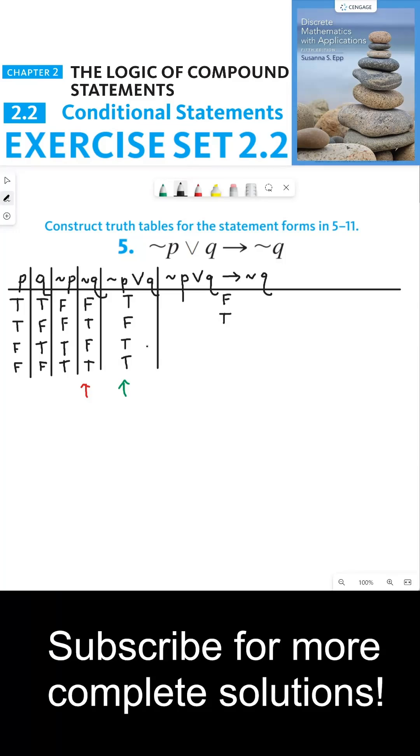It's vacuously true, but it's still true. The third row is false because the if part is true and the then part is false. And the conclusion is true. Thanks everyone, and I'll see you in the next video.